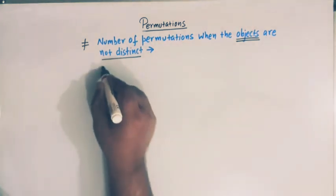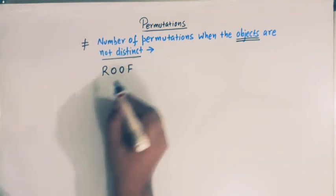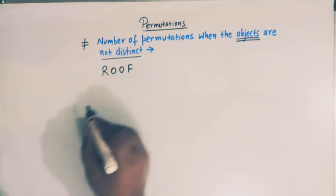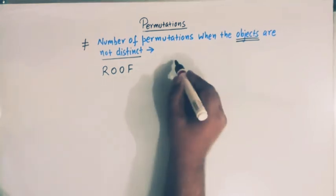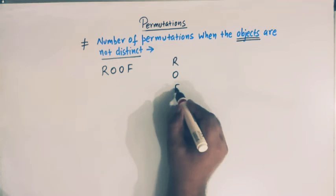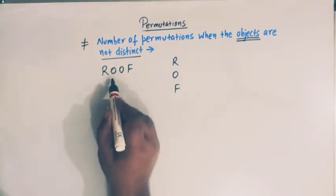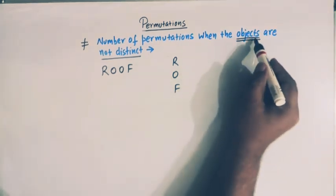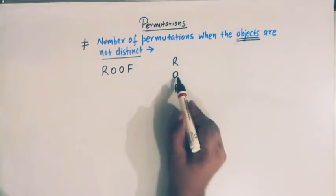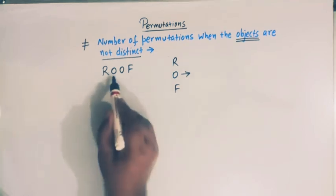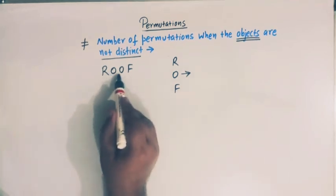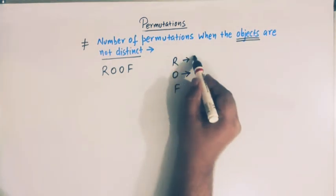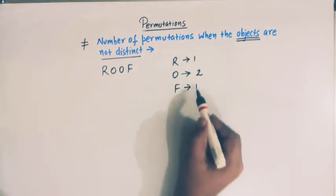Suppose we have the word ROOF. This word is made up of three alphabets: R, O, and F. If we call these three alphabets as objects, then we see that the alphabet O appears twice, and R and F appear only once.